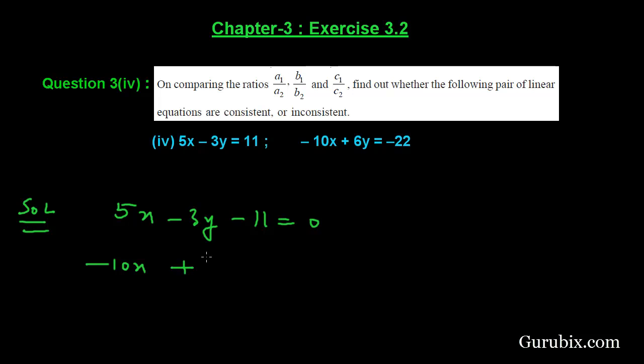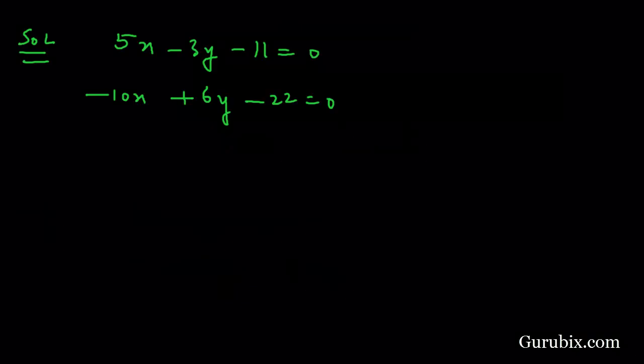And the standard form of the second equation will be minus 10x plus 6y minus 22 equals to 0. And now we shall easily calculate the ratios a1 over a2, b1 over b2, and c1 over c2.